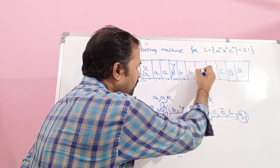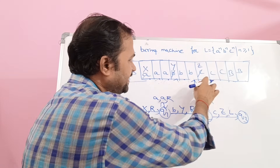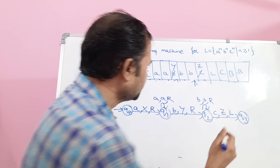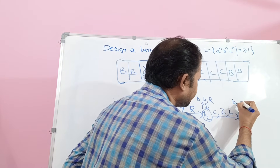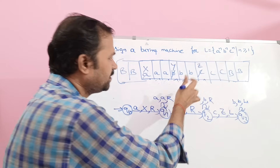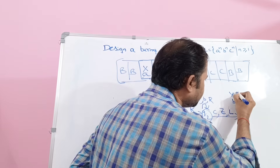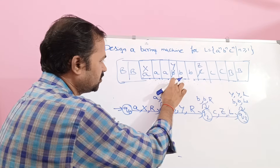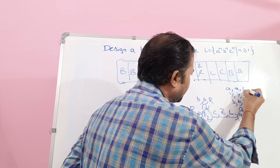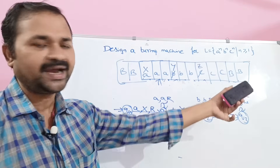We replace C's content and move the head towards the left. On Q3, we move left past B's without changing them, and past Y's without changing them, until we get X. So if we apply B on Q3, don't change B but move the head left. If we apply Y on Q3, don't change Y but move the head left.